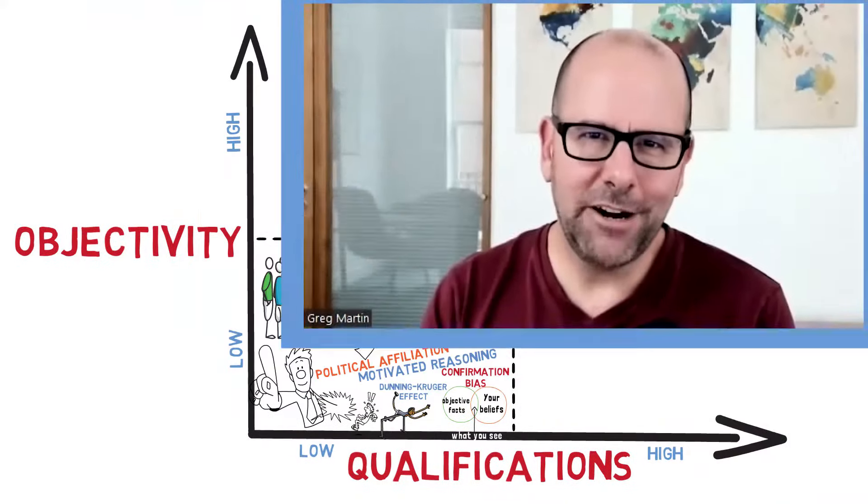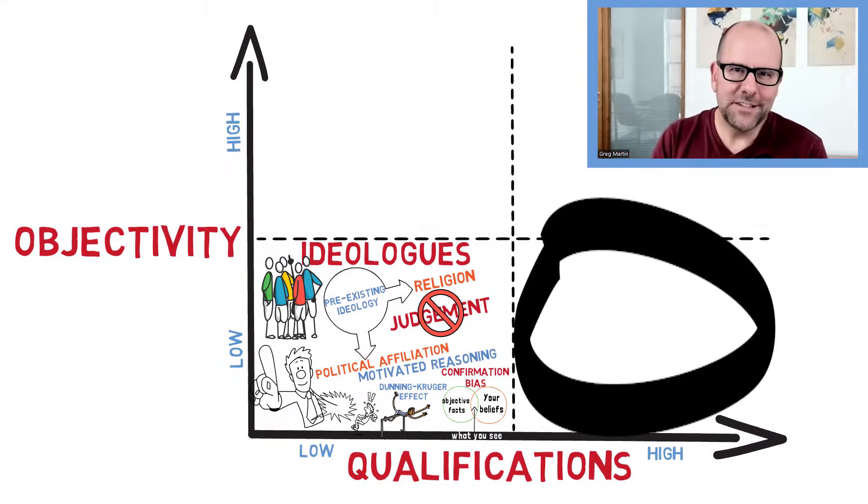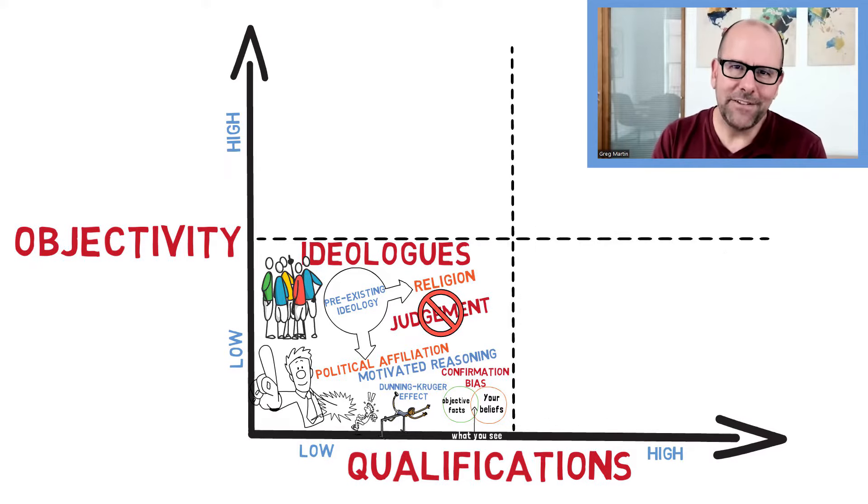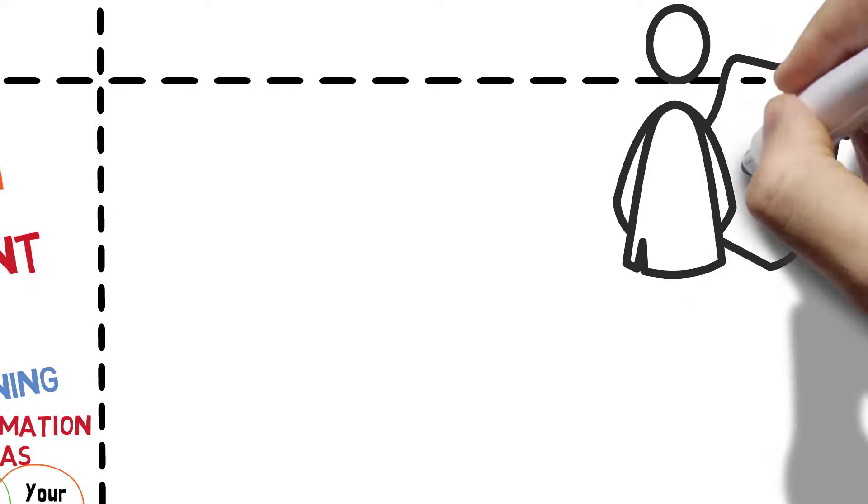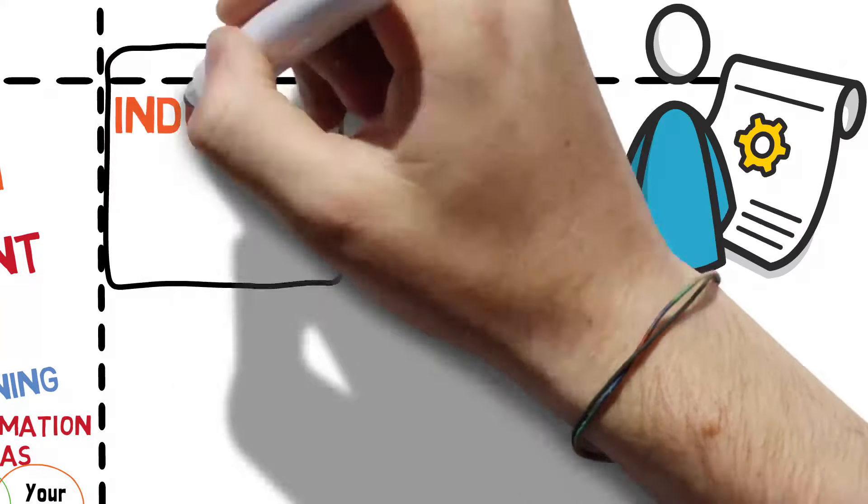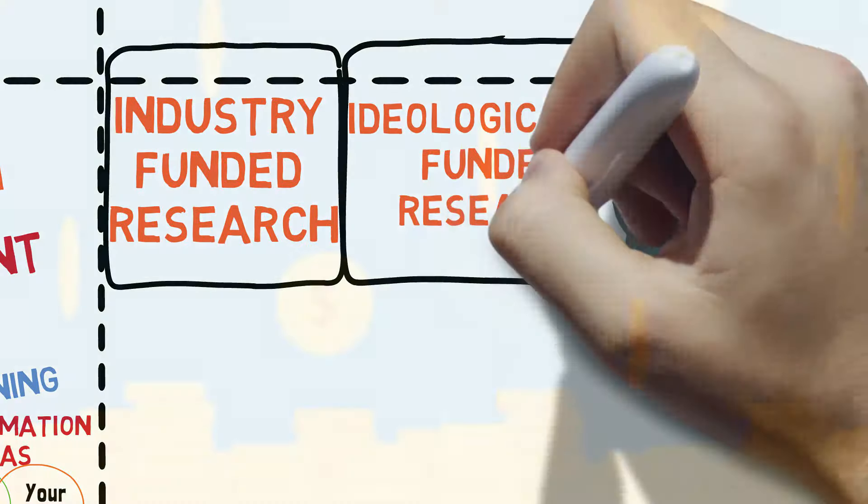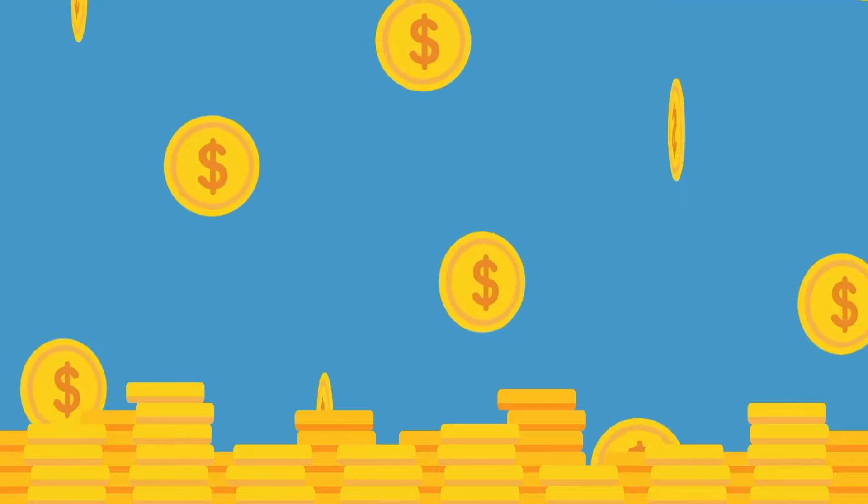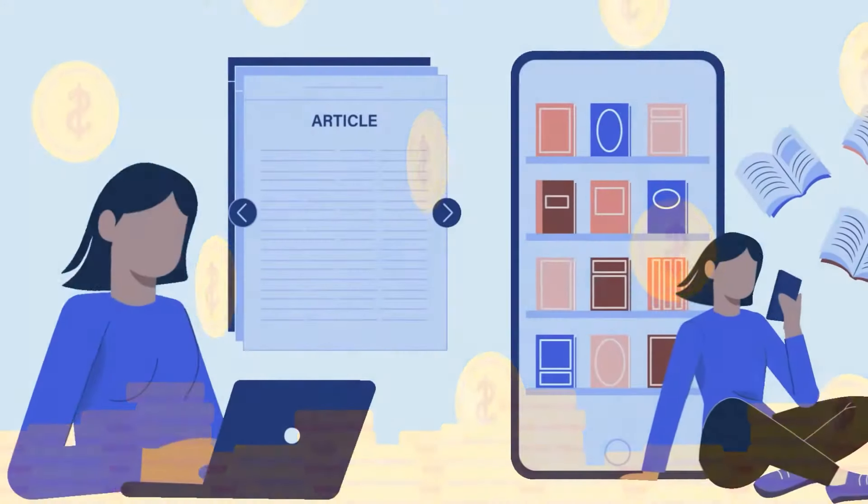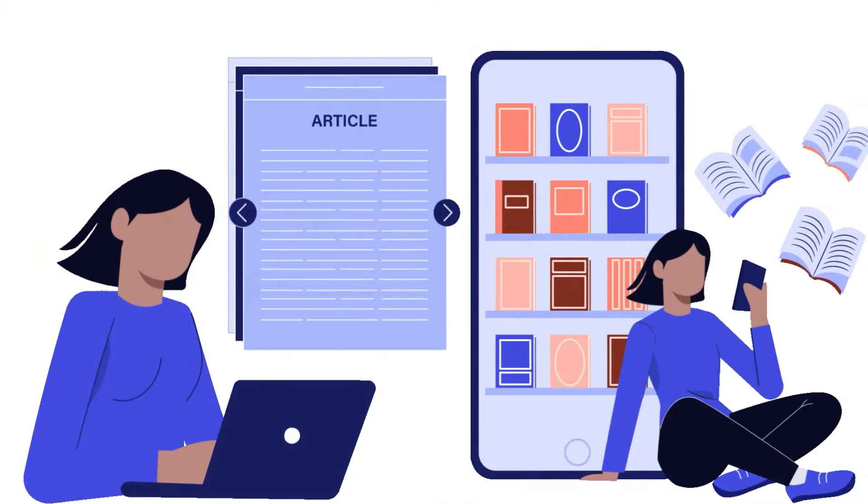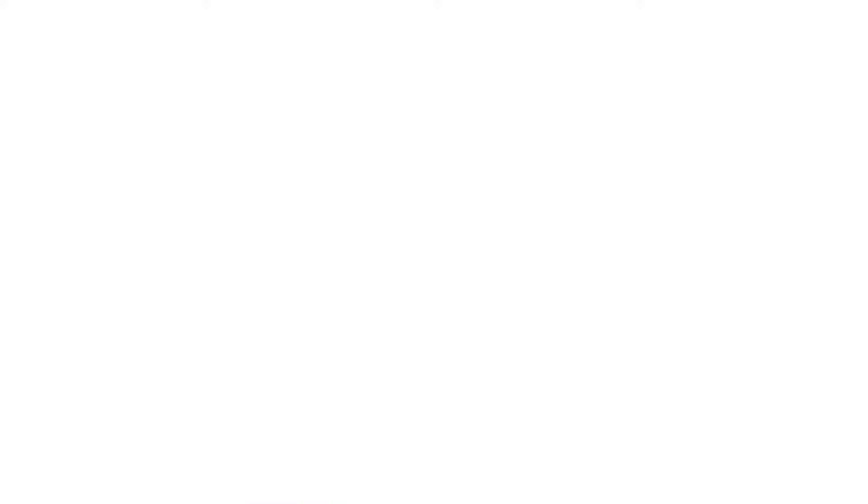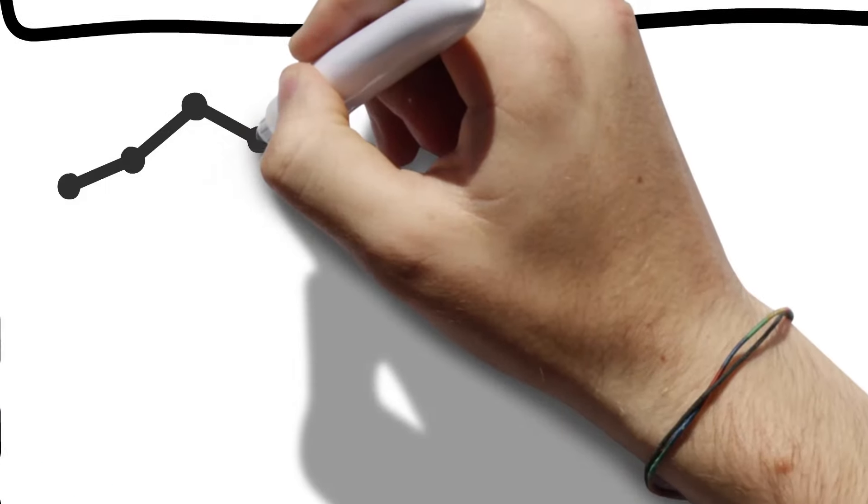Now let's look at the next quadrant. Here we've got a category of people or groups or institutions who, despite having a high level of expertise, are still nevertheless not objective. So a good example of this is industry or industry-funded research or ideologically funded research. Where financial or ideological incentives come into play, you might find that only those studies that support a particular position get submitted for publication or that the science itself is subject to something we call p-hacking.